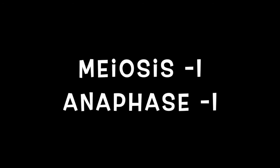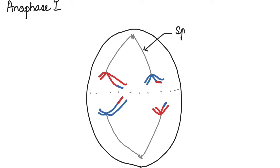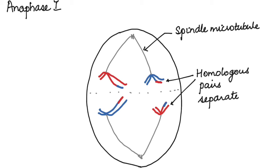So in anaphase 1, the homologous pairs that had arranged themselves along the equatorial plate now start moving away from each other towards the poles. So here the spindle microtubules, they contract leading to the centromere of the chromosome being pulled towards the opposite poles. This results in separation of the homologous pairs. Here you can also see the result of crossing over in the form of the exchanged genetic material in the non-sister chromatids. So here the homologous pairs separate and move to opposite poles.